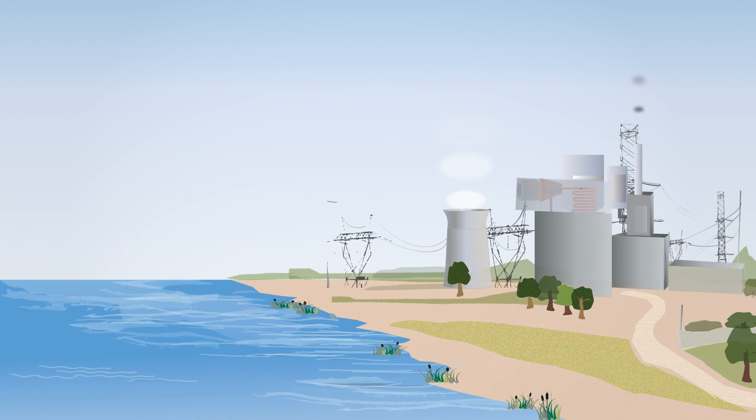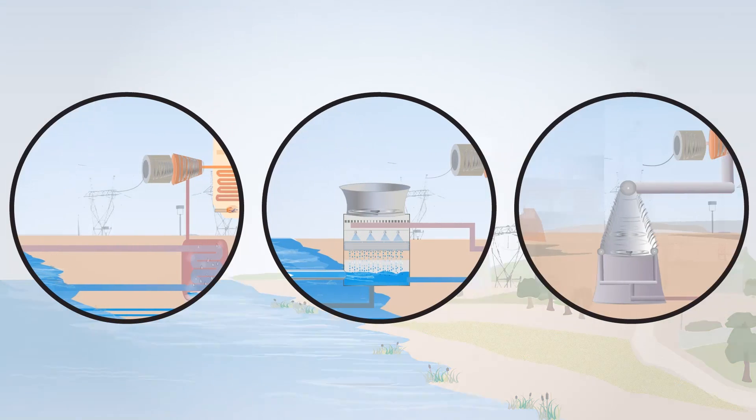The type of cooling system used in the power plant and the plant design determine how much water is consumed. There are three main types of cooling systems being used today. Let's look at these options.